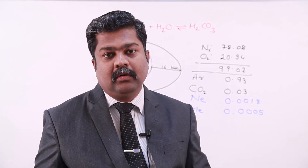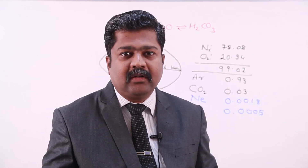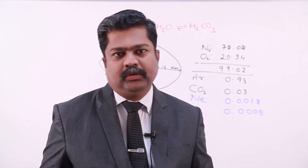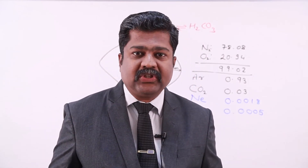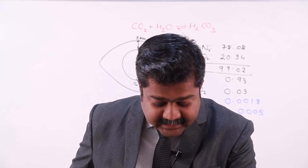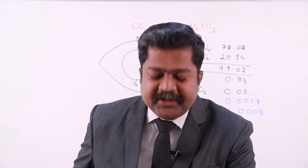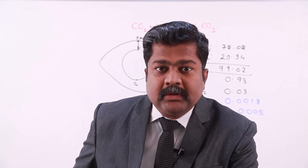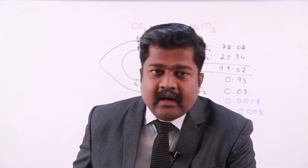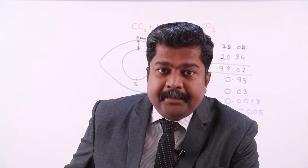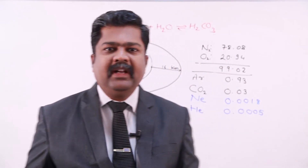Other trace gases include ozone and hydrogen, each present in very small percentages. Krypton, xenon, and methane are also present in traces only. To revise: nitrogen and oxygen are present in considerably large amounts and are called the permanent components of the atmosphere. Other components include carbon dioxide, neon, helium, ozone, and hydrogen, while krypton, xenon, and methane are present in traces.